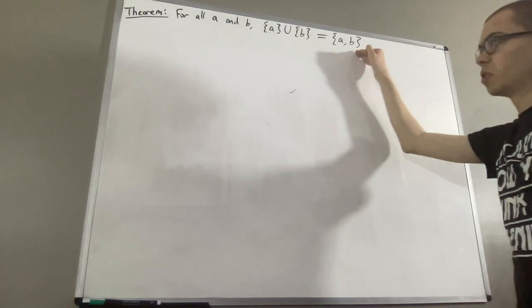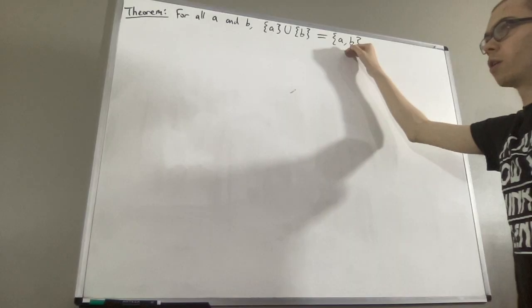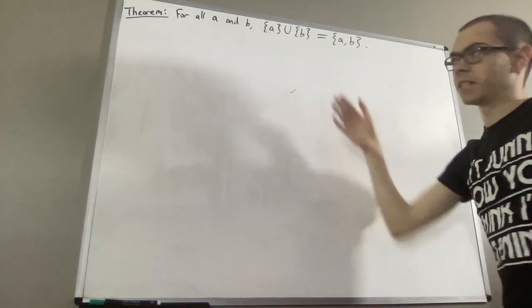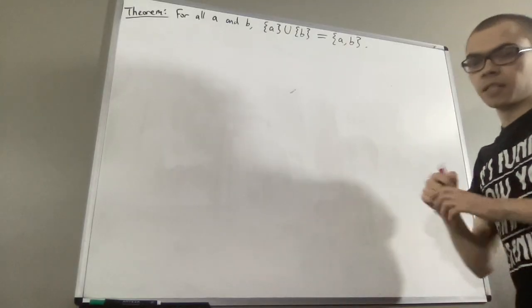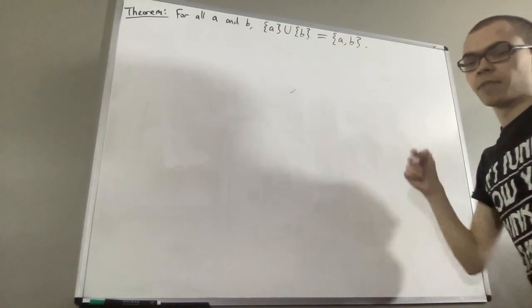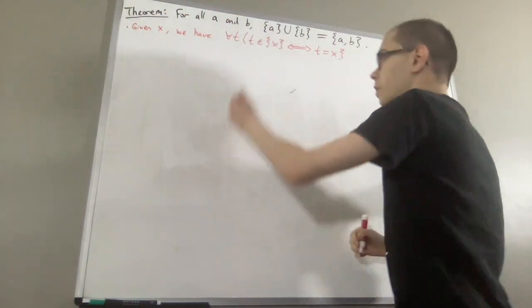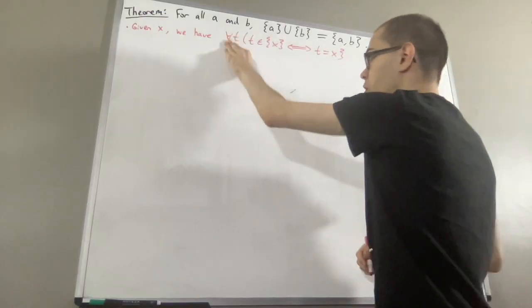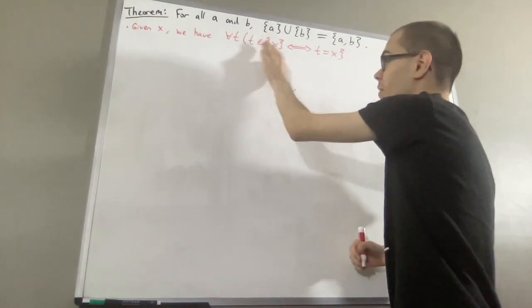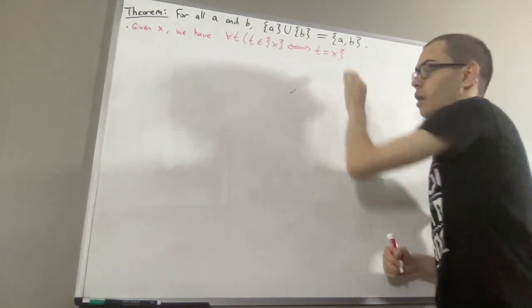Now let's remind ourselves what singleton sets and pairsets are, or what property they satisfy. So given an object X, the singleton set of X satisfies the property that for all T, T is an element of the singleton set of X if and only if T is equal to X.